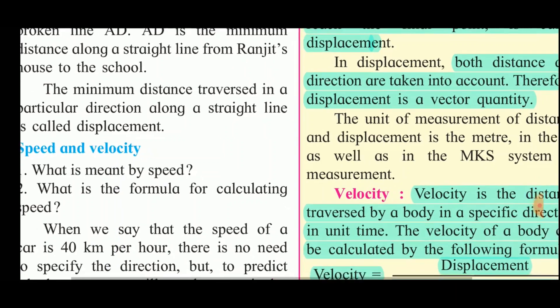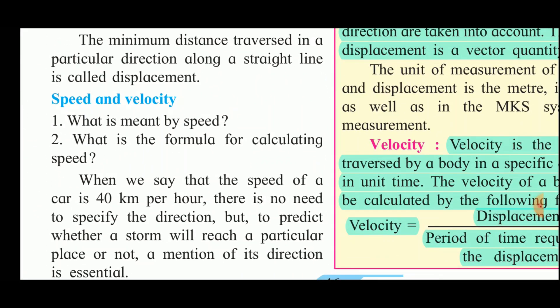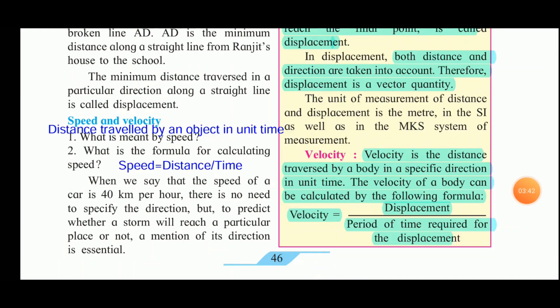Now we will see the difference between speed and velocity. Speed is the distance travelled by an object in unit time. The formula for calculating speed is: speed equals distance divided by time. When we say the speed of a car is 40 km per hour, there is no need to specify the direction. But to predict whether a storm will reach a particular place or not, a mention of its direction is essential.